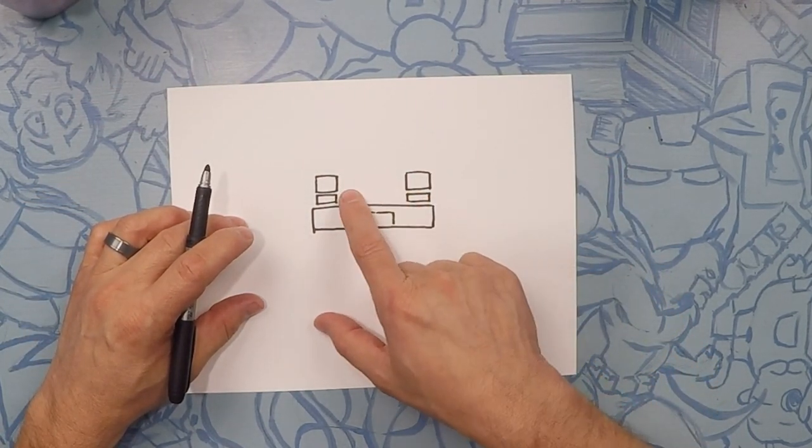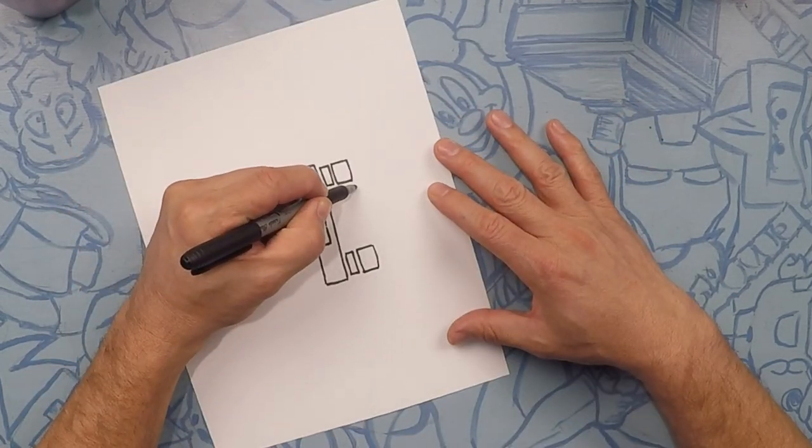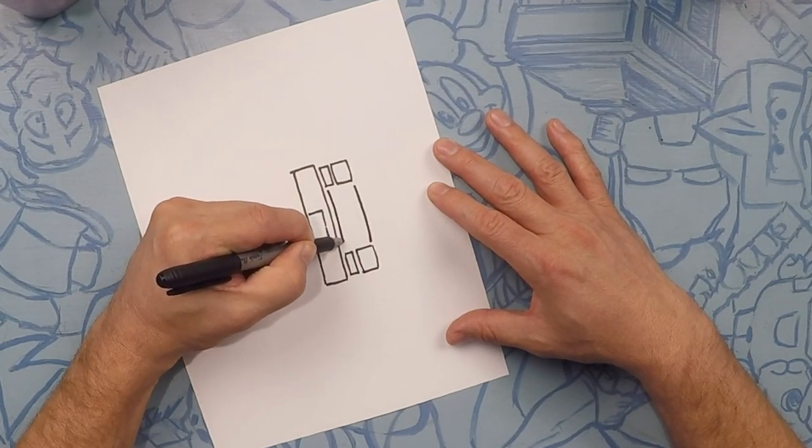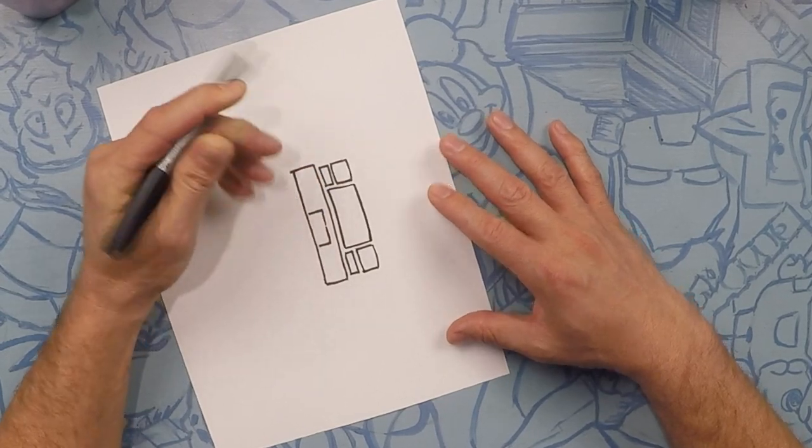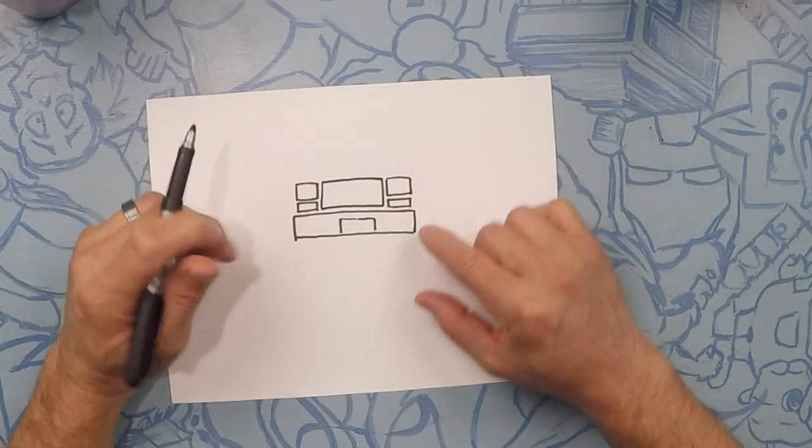So next, right in the middle, we're gonna do another rectangle. This is gonna be like the grill area. Rectangle, line, line, and line. There. Almost kind of looks like we're building a little house. So this is the front part of the truck.